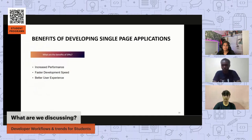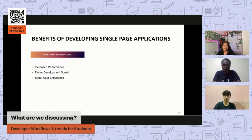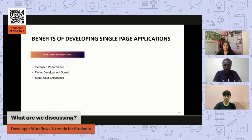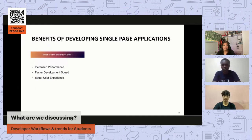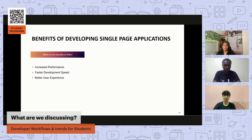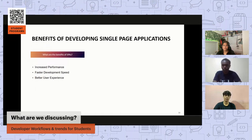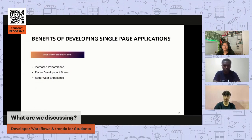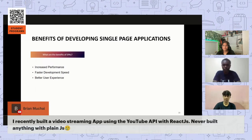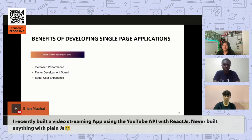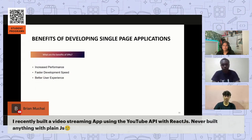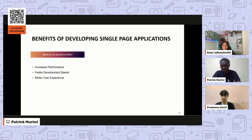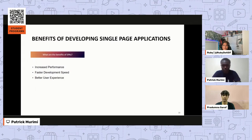Other good examples of SPAs include GitHub and Facebook. The benefits of single page applications are: increased performance — only essential data is retrieved and updated, not the entire website; faster development speed — developers can separate front-end and back-end concerns and focus on the front-end interface; and better user experience — by minimizing full page reloads, SPAs create a more seamless, faster, and more responsive application.